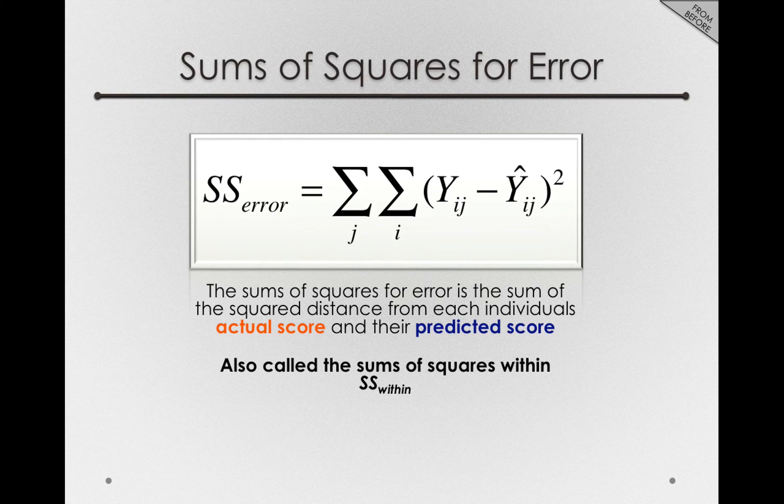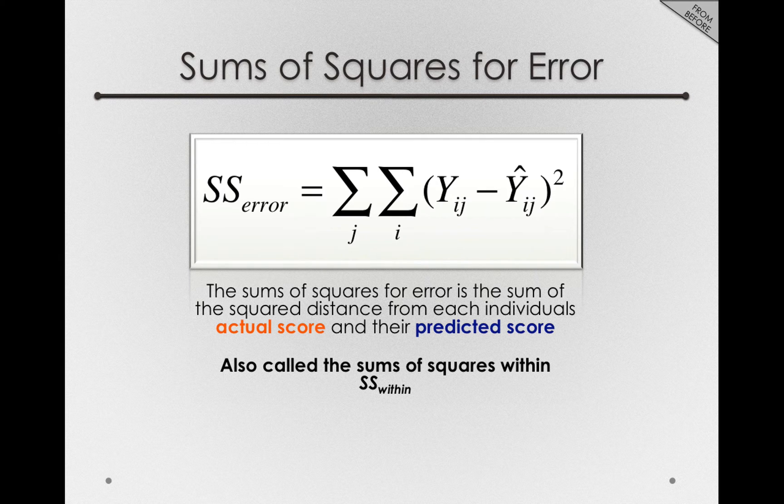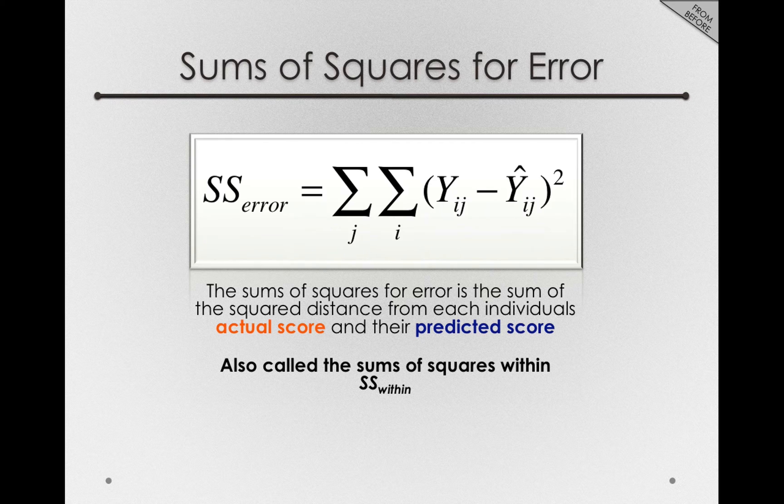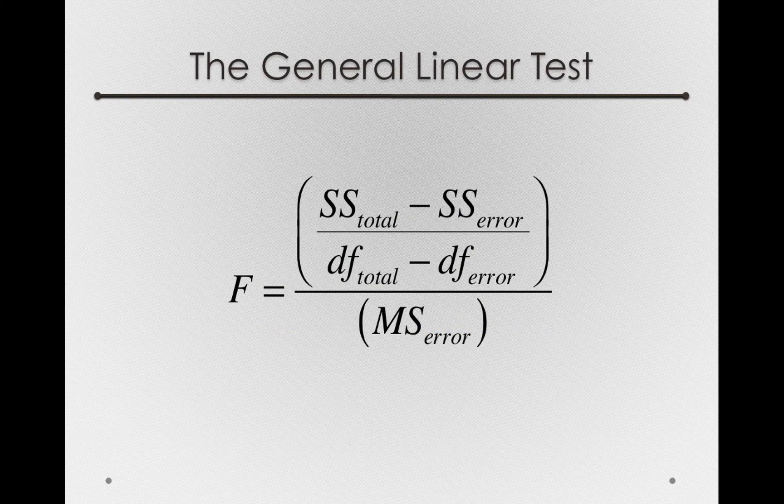So this will leave the sums of squares error, the error that's around the treated means. Or said differently, the error between an individual's actual score and the predicted score, a score predicted using those treatment offsets. So this in the denominator and numerator will just be the sums of squares error and degrees of freedom error.